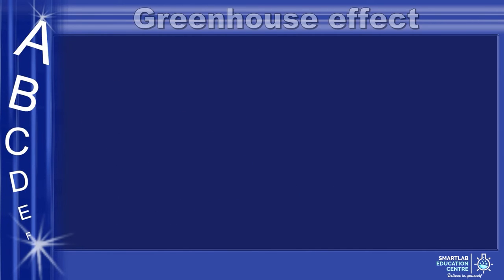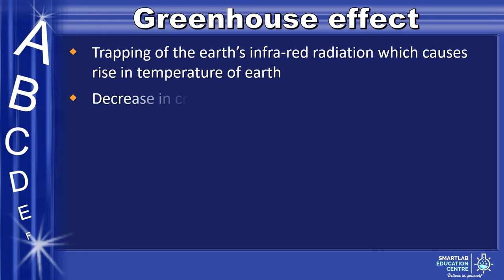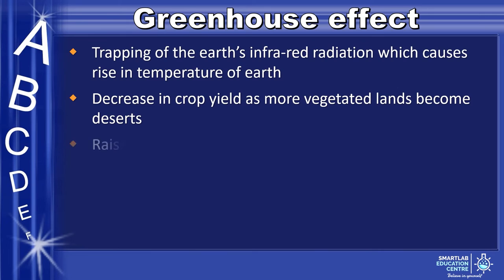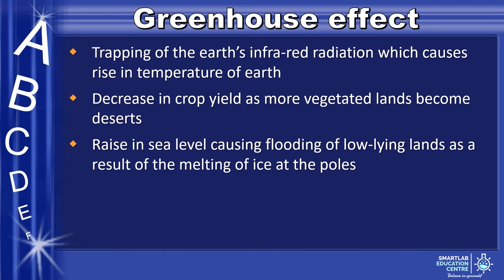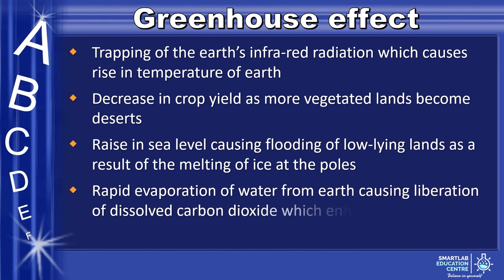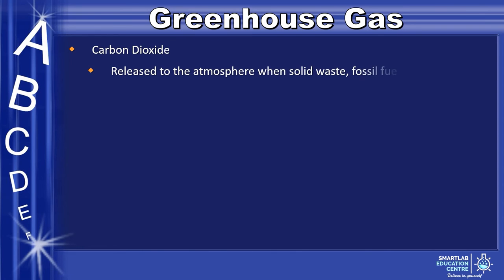The greenhouse effect involves the trapping of the Earth's infrared radiation, which causes a rise in temperature of the Earth. It leads to a decrease in crop yield as more vegetated lands become deserts. It also raises sea levels, causing flooding of low-lying lands as a result of the melting of ice at the poles. It also leads to rapid evaporation of water from Earth, causing liberation of dissolved carbon dioxide, which further enhances the greenhouse effect. Examples of greenhouse gases include firstly carbon dioxide, which is released to the atmosphere when solid waste, fossil fuels, and wood are burnt.